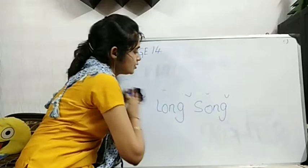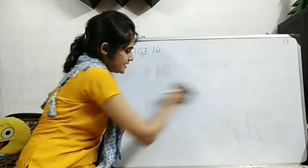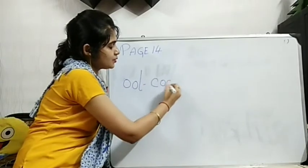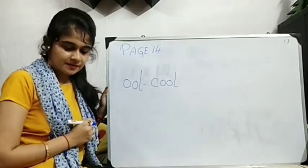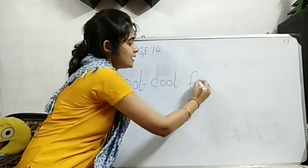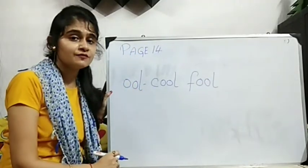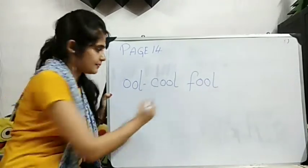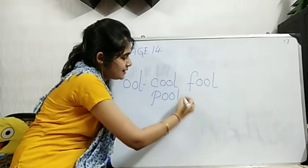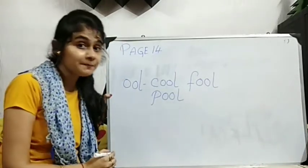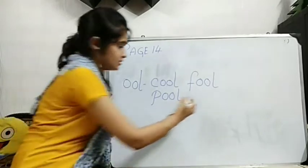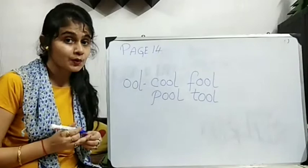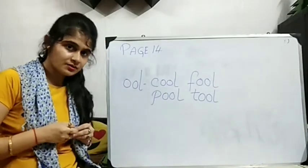Then we have double O. That also we have done. Right? Let's see what is there. Double O L. C-O-O-L. Cool. C-O-O-L. Cool. F-O-O-L. Fool. Fool. Manet boka. Cool manet thanda. P-O-O-L. Pool. Swimming pool. Right? Next. T-O-O-L. Tool. W-O-O-L. Wool. Okay? Clear?